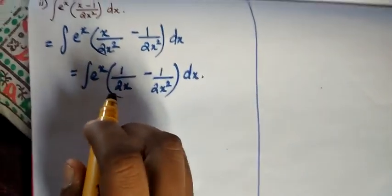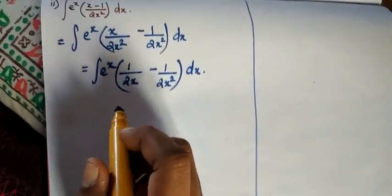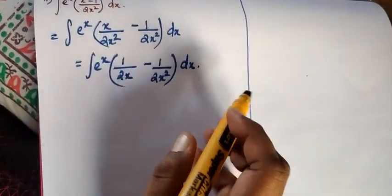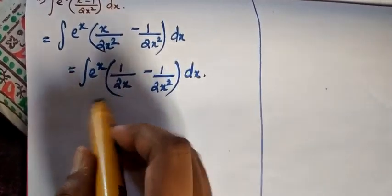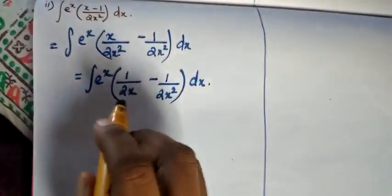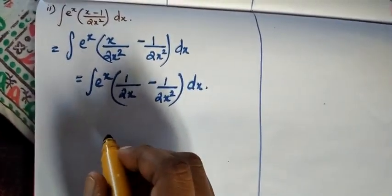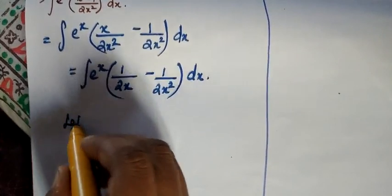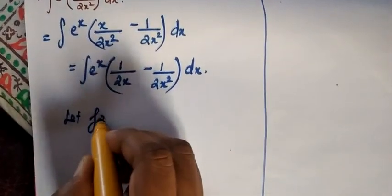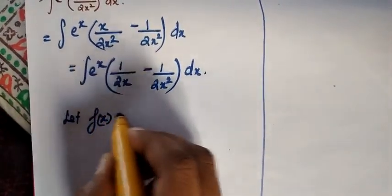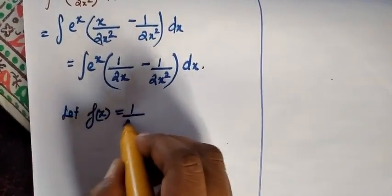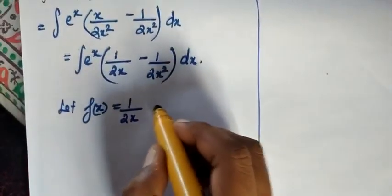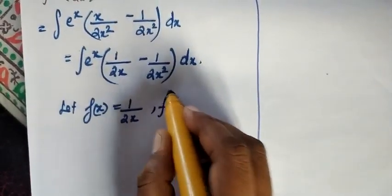Using the formula, we recognize this has the form eˣ[f(x) + f'(x)]. Let f(x) equal 1 divided by 2x. Now, what is our f'(x)?